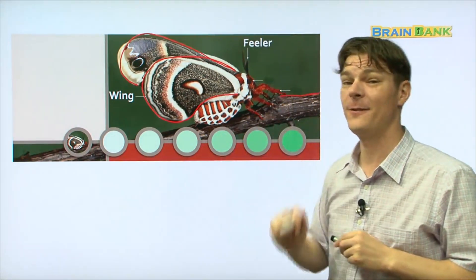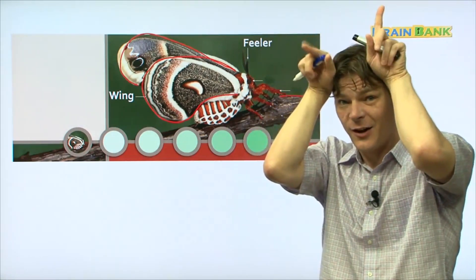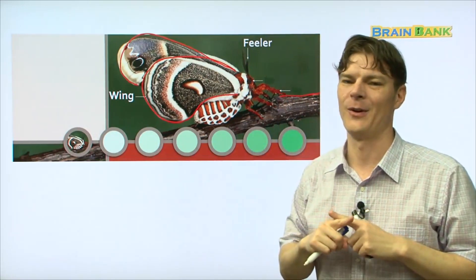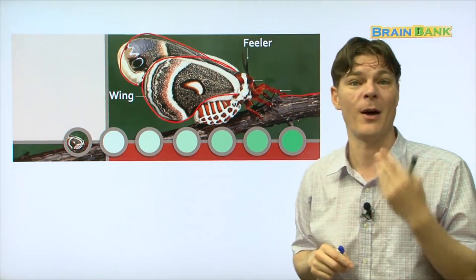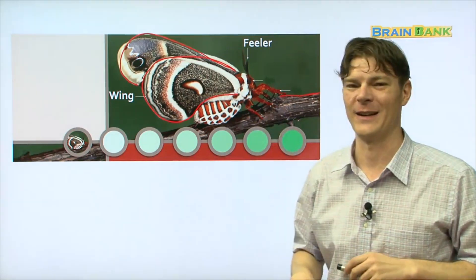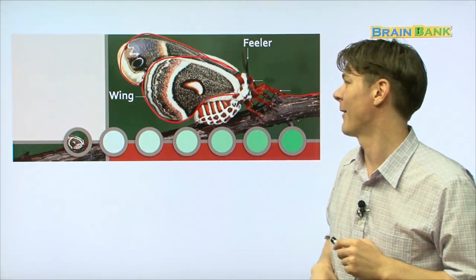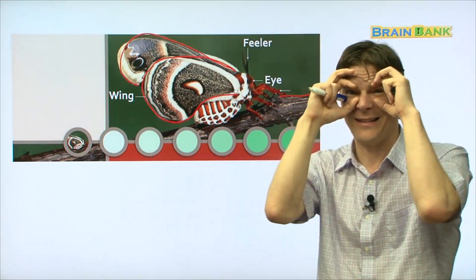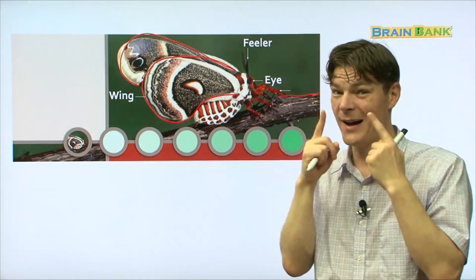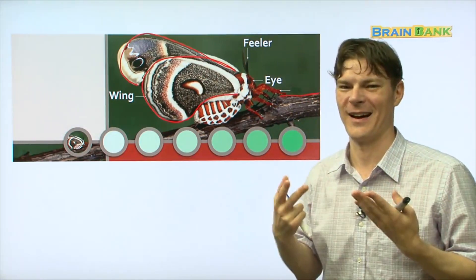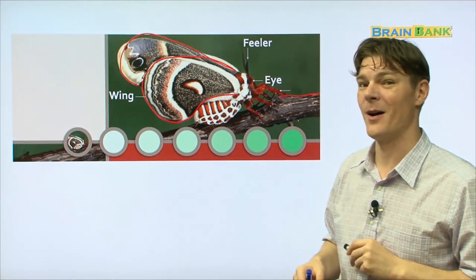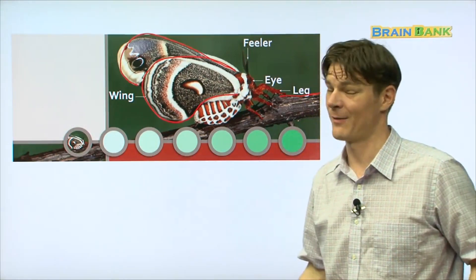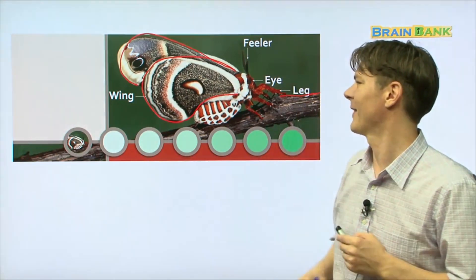What else does a moth have? A moth has feelers, which are kind of like antennas on the top of your head. Does a bird have feelers? No. Only the moth and some other insects. But this moth has feelers. What else does a moth have? A moth has two eyes. Does a bird have an eye? Or two eyes? Yes. A bird does have eyes. And a moth has legs. Just like a bird. A bird also has legs. We also have legs. So a moth has legs.